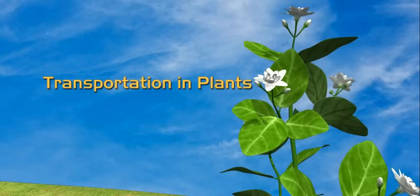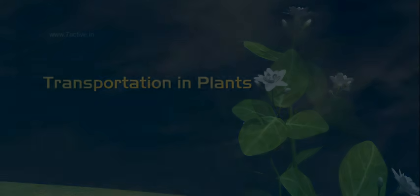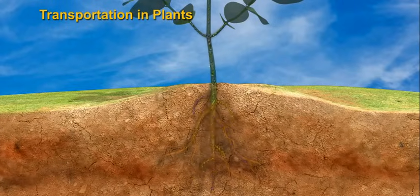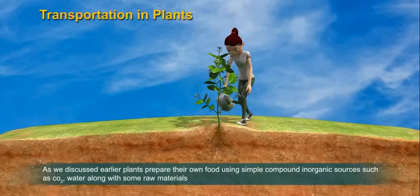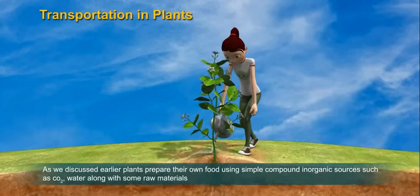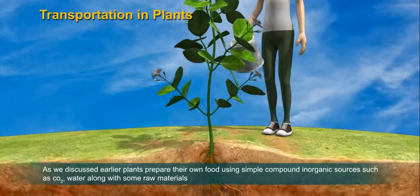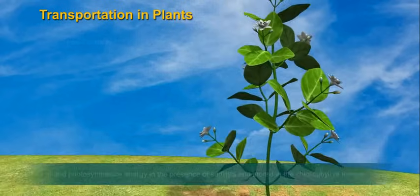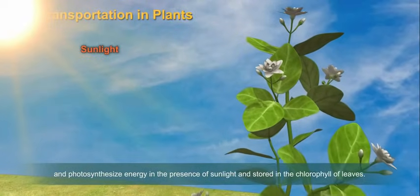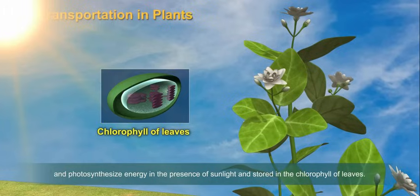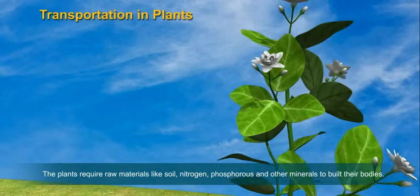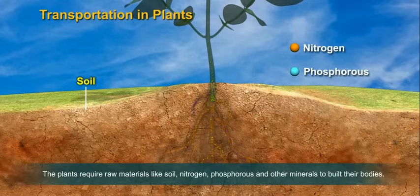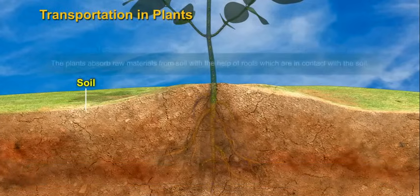Transportation in plants. In the previous section we have learned about transportation in human beings. Now let us learn transportation in plants. As we have discussed earlier, plants prepare their own food using simple inorganic compounds such as CO2, water, along with some raw materials and photosynthesize energy in the presence of sunlight, stored in the chlorophyll of leaves.